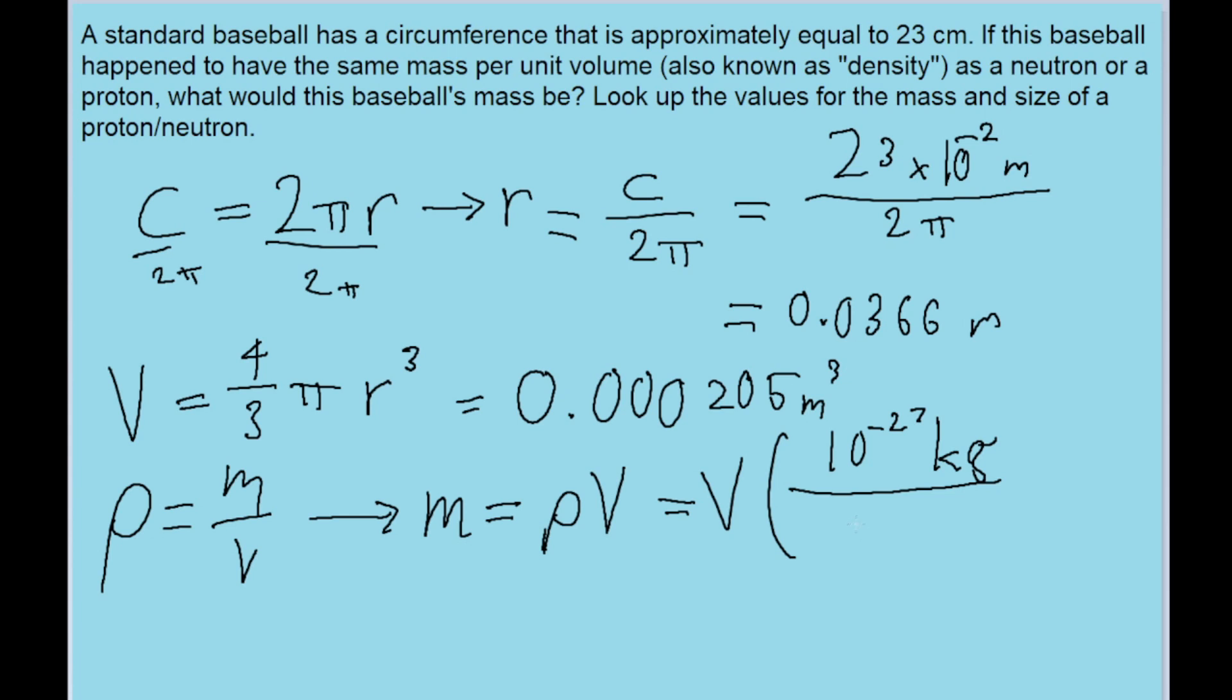And as for the volume of the proton or of the neutron, you're probably less likely to be given that in a textbook. But you are pretty likely to be given the diameter of the proton or the diameter of the neutron. So instead we're just going to use the volume formula that we used to find the volume of the baseball. So we're going to divide this mass by 4 thirds times π times the cube of the radius of the nucleon.